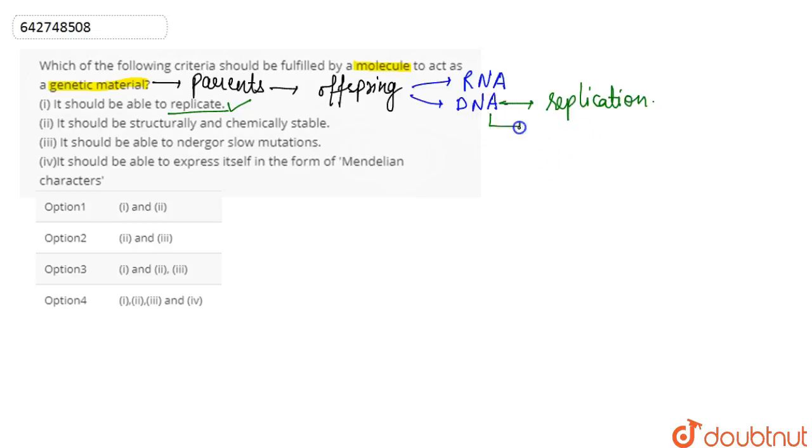It has two strands which basically run anti-parallel, and that basically provides stability to the structure. We can discuss that it should be structurally and chemically stable. Yes, correct. Because if it would be unstable then it would deviate. So the genetic material has to be stable.